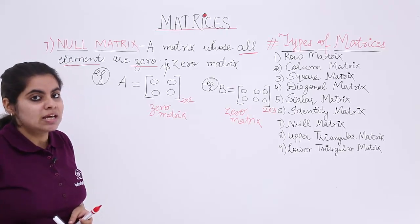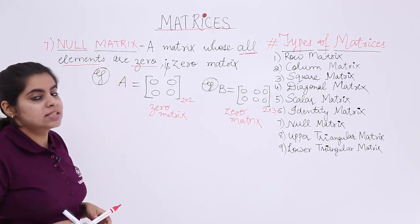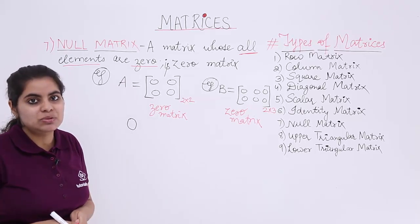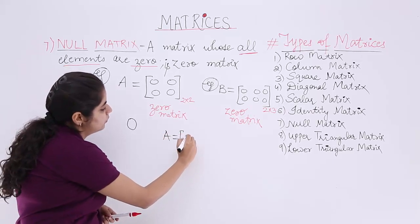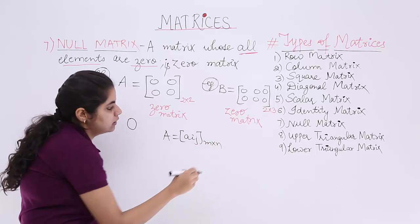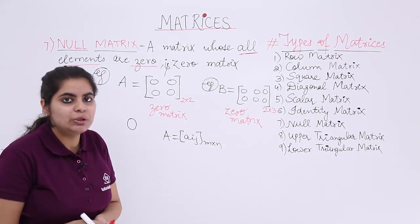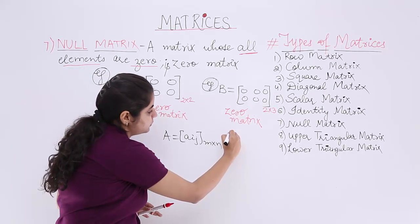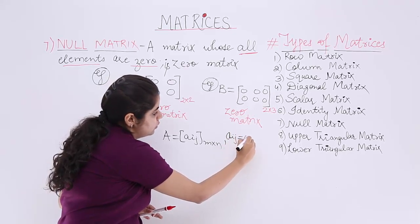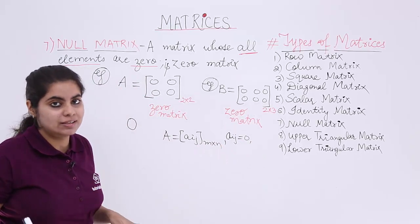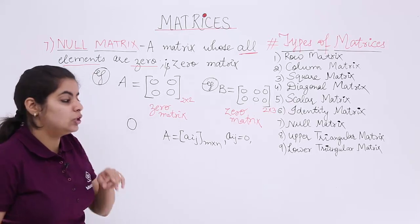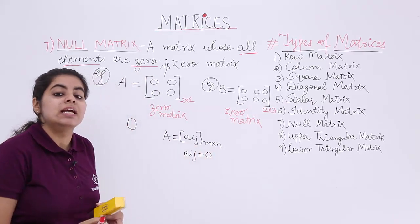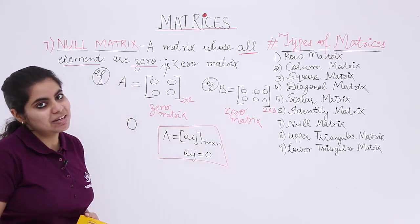One more important point: null matrix is usually denoted by a bold zero. So if somewhere you find this zero symbol, it is used to denote a null matrix. If somebody wants to write the formal definition, it would be: A = [a_ij] of order m by n, where m can be equal to n or m cannot be equal to n — both conditions are possible — and a_ij = 0 for all i and j, whether i equals j or i does not equal j.